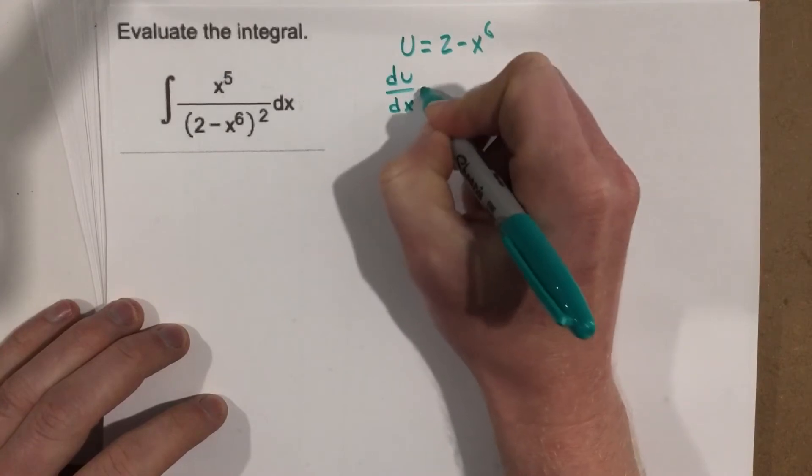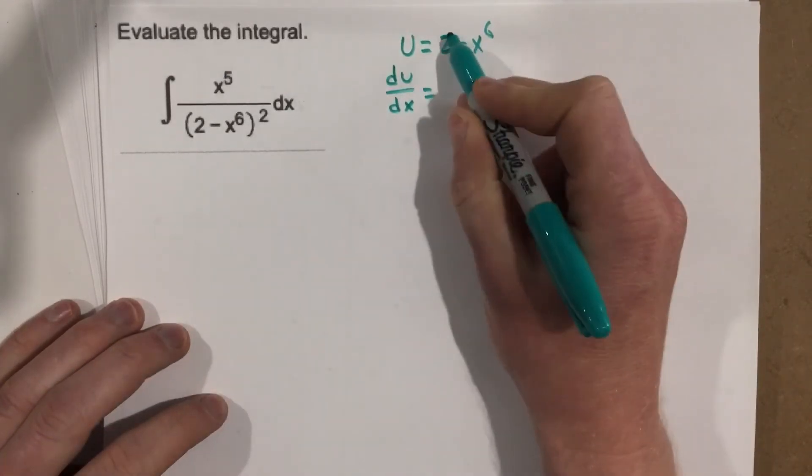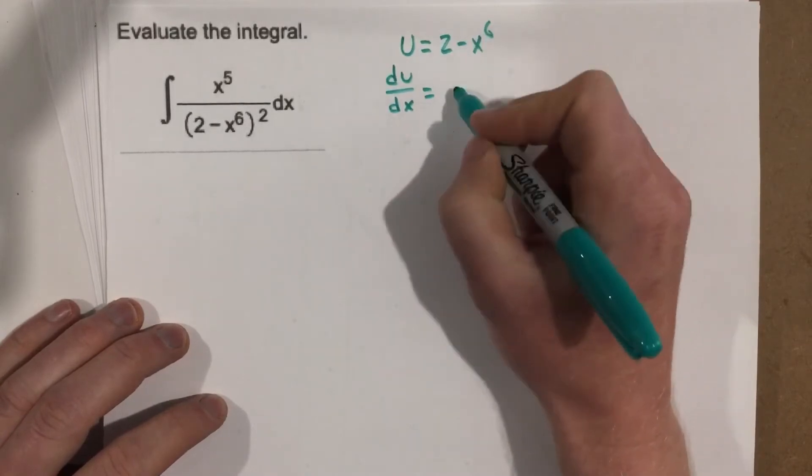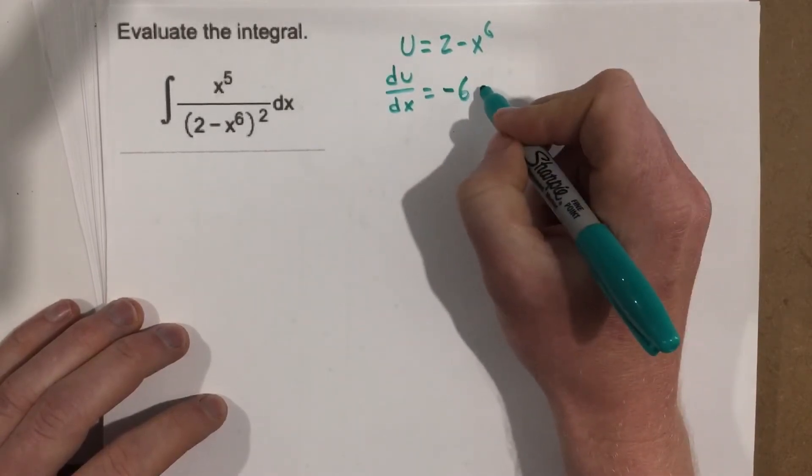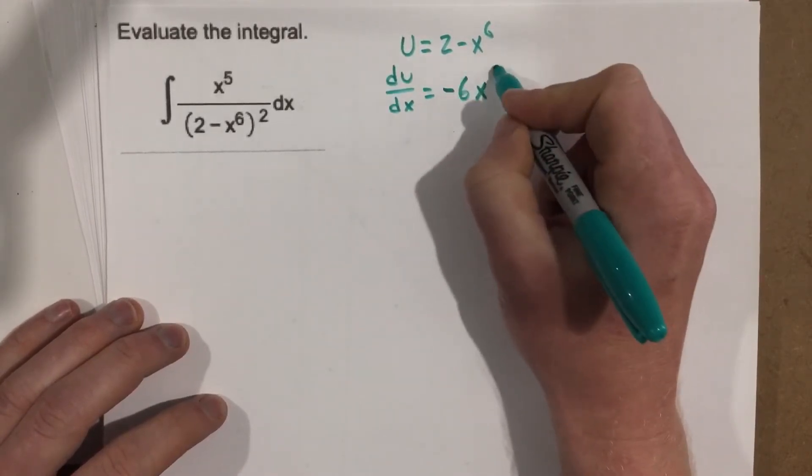du over dx, then, is going to be—well, that's 0, the derivative of 2 is 0. The derivative of negative x to the 6th is negative 6, and then x to the, subtract 1, 5th.